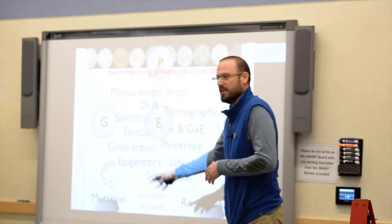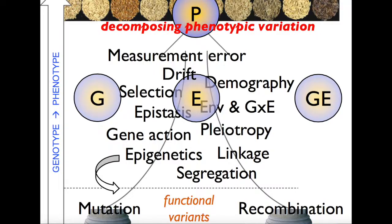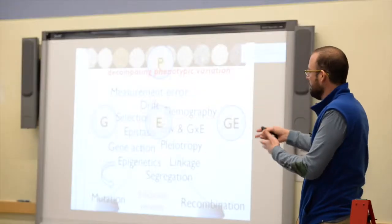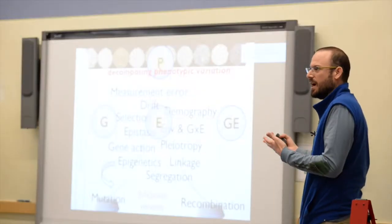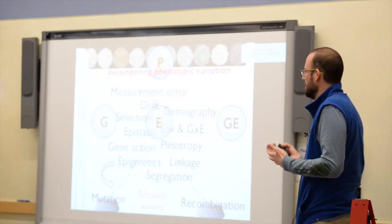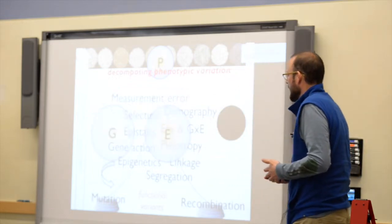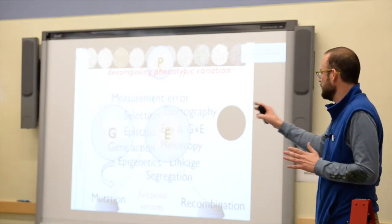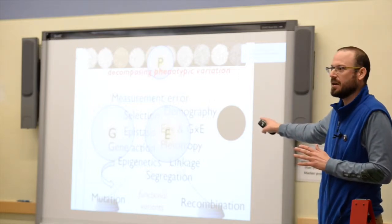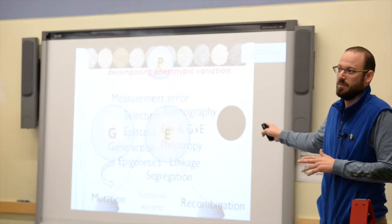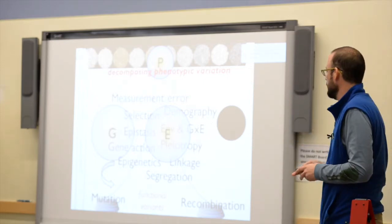That generated variation then expresses itself through different levels — getting into the more technical aspects of how genetics is characterized, described, and understood. There are multiple different sources that underlie variation in phenotypes. Today I'm just going to focus on genotype and environment, and leave genotype-by-environment interaction as a black box for another time.